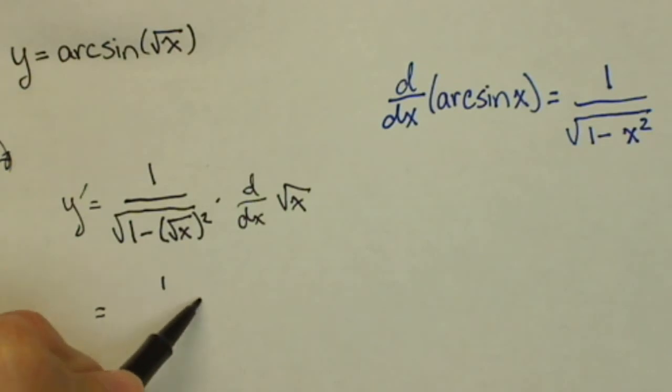So we still need to take that derivative to finish our chain rule. So we have 1 over the square root of 1 minus, square root of x squared is just x.